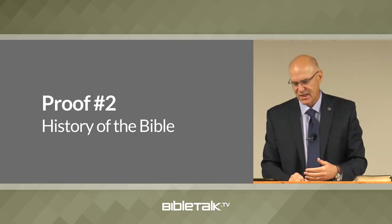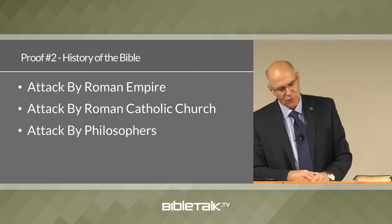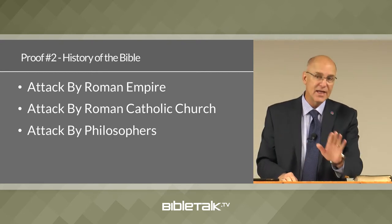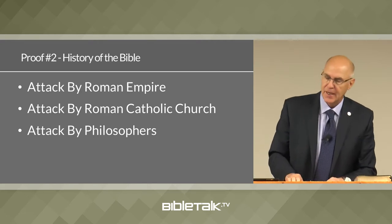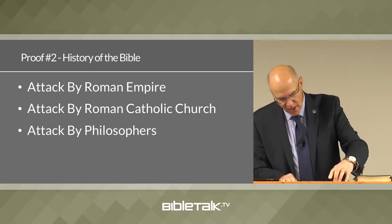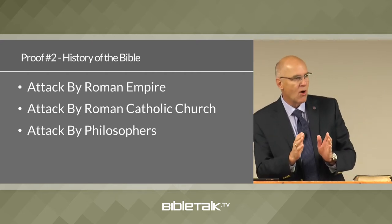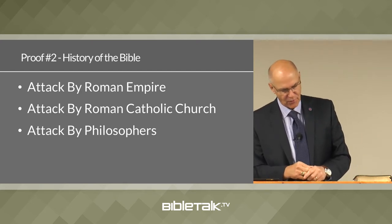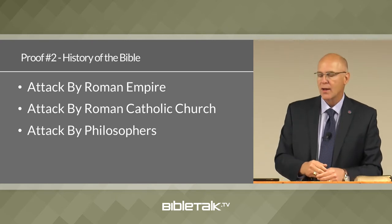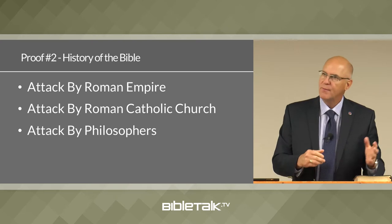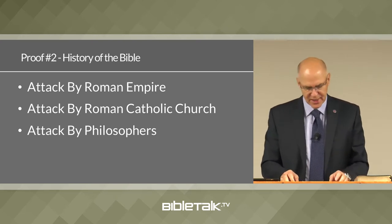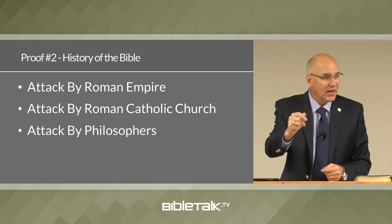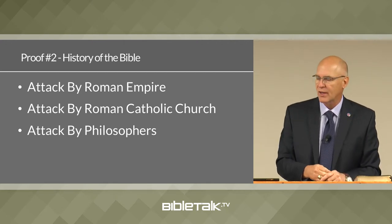What attacks? Well, the attack by the Roman Empire. From 249 AD to 305, it was a capital offense to be in possession of any portion of Scripture — one reason why copies from this period were very small, because they were easier to hide. By the fourth century, Constantine, the emperor of Rome, actually paid for copies of the Bible to be made. The Bible survived the most powerful empire in history that was bent on destroying both the religion and its literature, but failed. Mighty Rome could not destroy the Scripture.